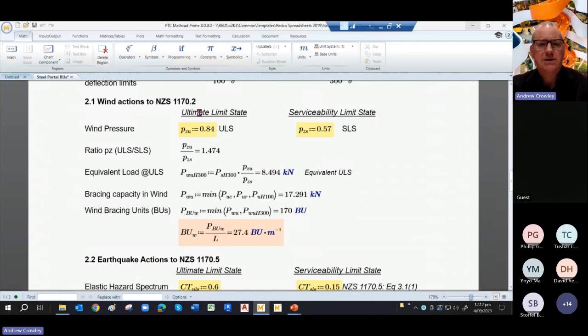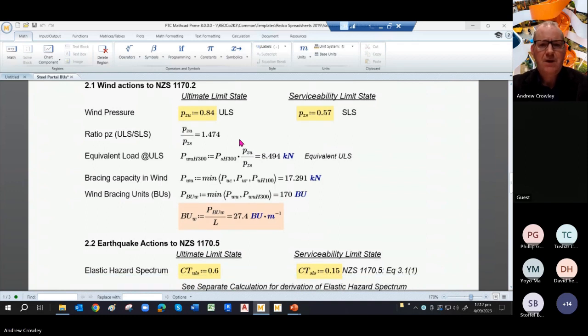Now we want to look at wind as applied to our frame. Well, we've done separate calculation, which is the earlier pages of that spreadsheet as to what the wind pressure is on our building. We then work out the ratio between ULS and SLS. And here we go, 1.474. We factor that up to give us an equivalent load at ULS. And so the bracing capacity in the wind is simply the minimum of these various calculations, which give us 17.2.